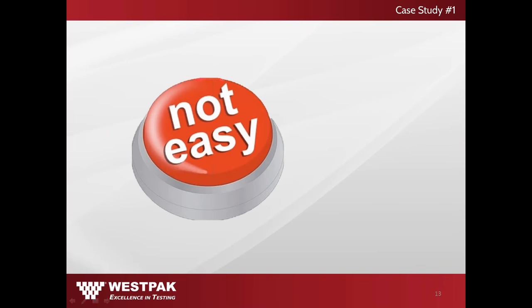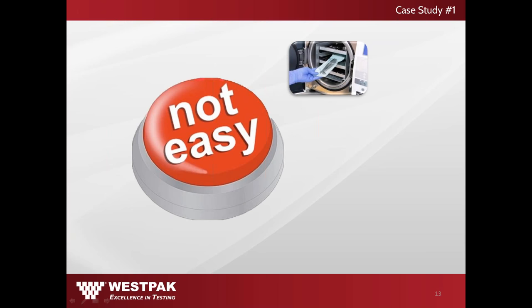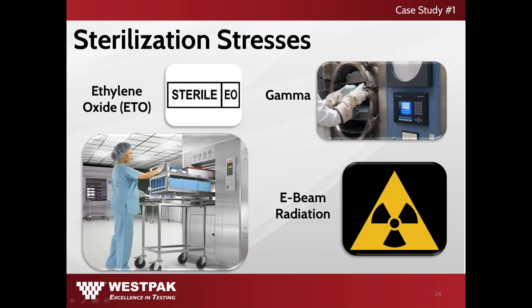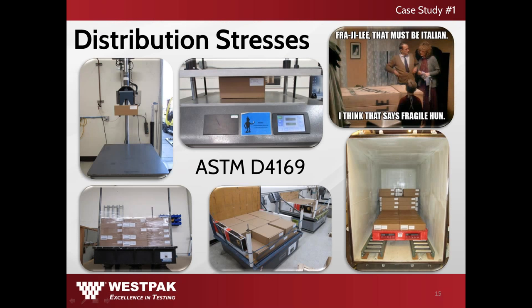Creating a successful package design is not always easy. Factors such as sterilization, distribution, and environmental stresses need to be considered. It's important to ensure that the sterile barrier is not compromised. Sterilization processes such as ethylene oxide, gamma sterilization, and e-beam radiation can all impact the integrity of the package system. It's also important to understand the distribution stresses the package will be subjected to. In ASTM's package performance standard D4169, a distribution simulation test sequence is followed.